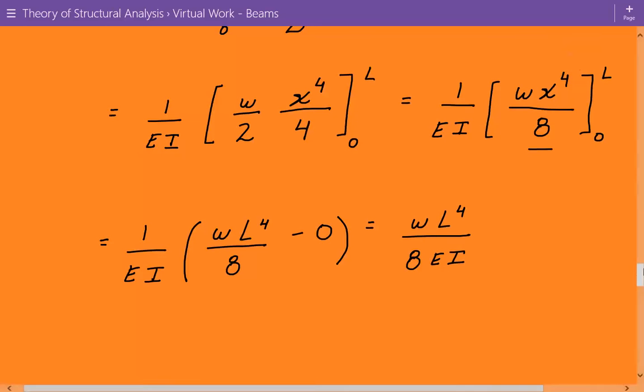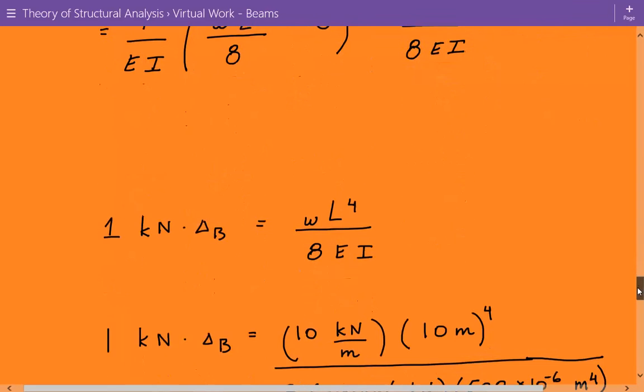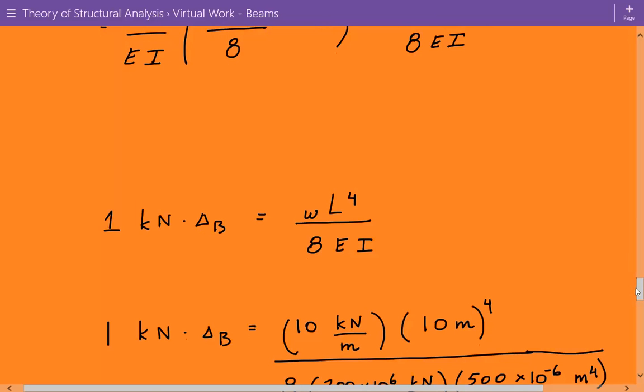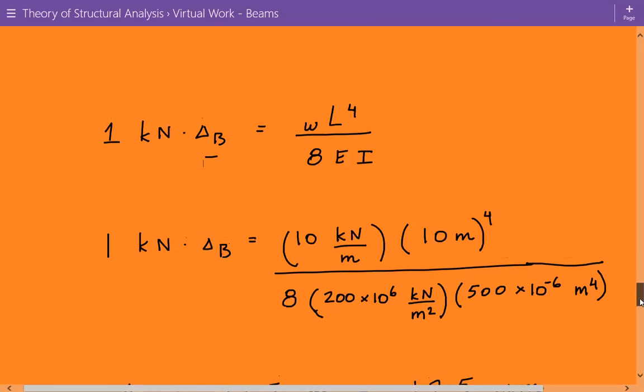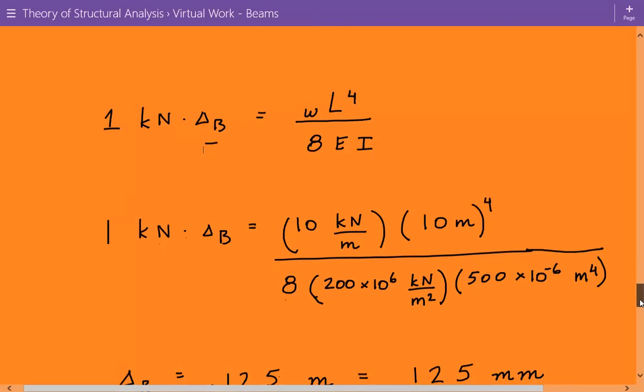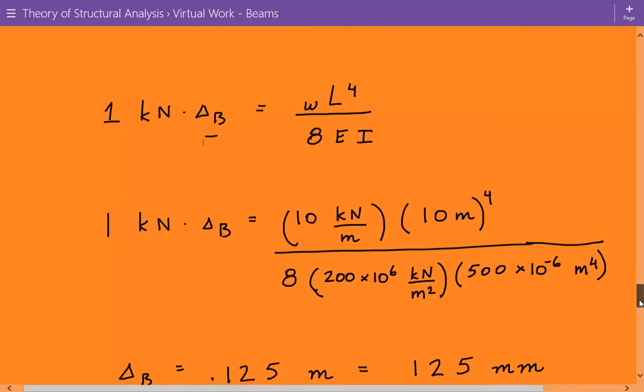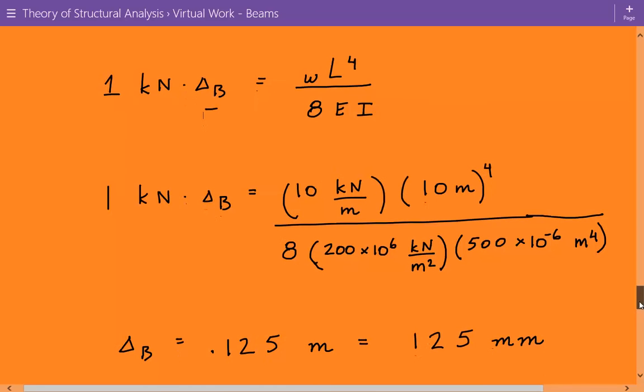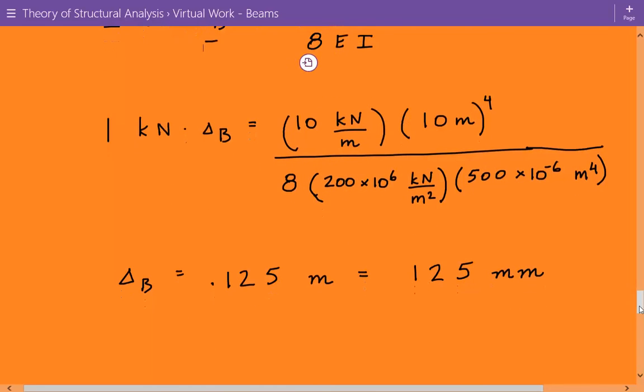So here is our virtual work equation again. 1 kilonewton times delta B equals WL to the fourth divided by 8EI. And now we can plug in the actual values for W, the uniform loading, and L, the length of the beam, and then also the Young's modulus and the moment of inertia. And we get delta B is equal to 0.125 meters or 125 millimeters.